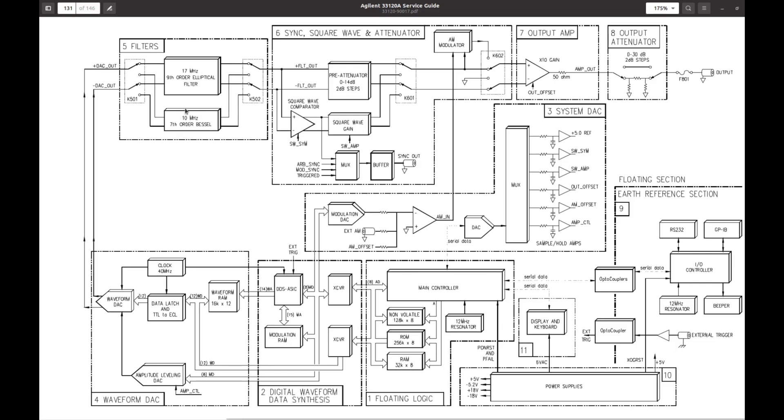Waveform DAC produces differential output, which goes to filters. And there are two signal paths here through this 17MHz low-pass filter and 10MHz low-pass filter, to get rid of high-frequency noise. The output of this is still differential and goes to this pre-attenuator, 0 to 14 dB in 2 dB steps.